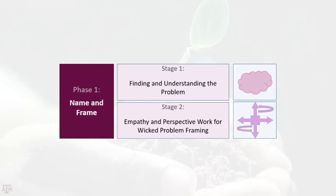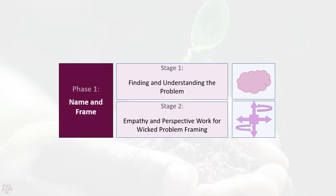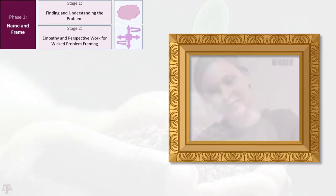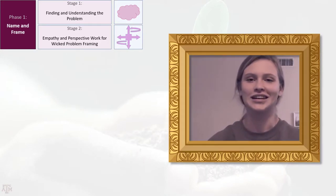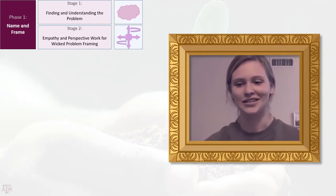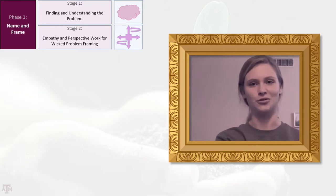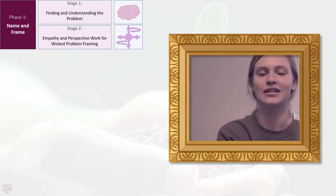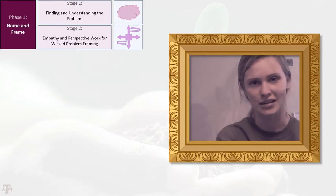A wicked problem is one for which it is impossible to create a perfect solution. There are many possible solutions, but whatever solution you decide to implement will create new problems. Phase one is Name and Frame — you start with a general topic like food waste and then narrow it down to something specific, like food waste management at Texas A&M.